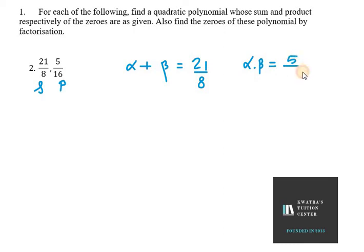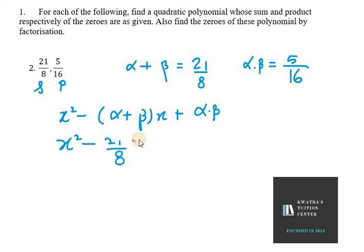Now we know that polynomial can be written in the form of x square minus alpha plus beta x plus alpha dot beta. That is product. So my equation will look like x square minus 21 over 8 x plus alpha dot beta is 5 over 16. Now we need to take LCM of this equation.